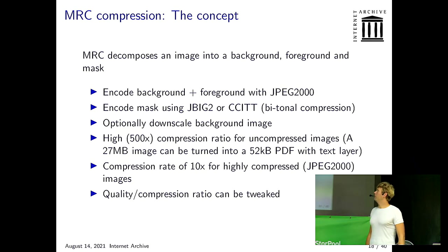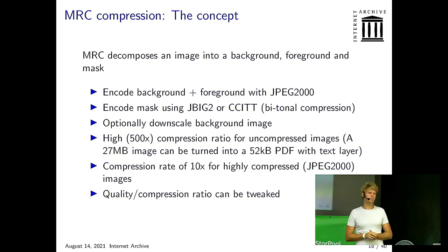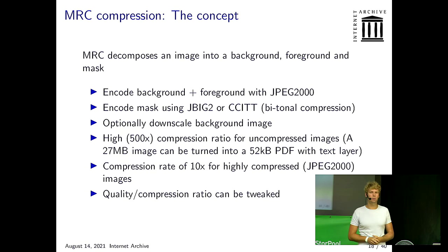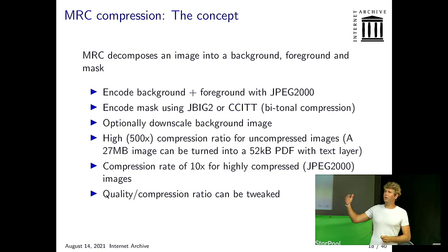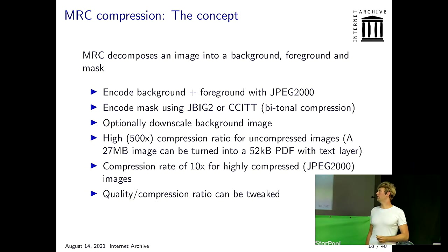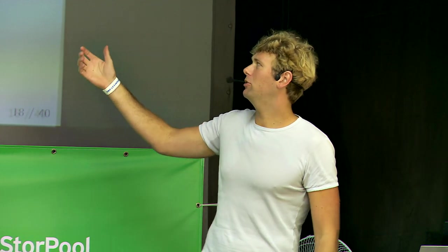How much does this compress? If you take a completely uncompressed image, you can compress up to 500 times easily and still have a pretty readable result. If I get a letter from the government, scan it, and compress it, it will go from about 27 megabytes to 52 kilobytes — really small. If you do that with already compressed images like JPEG 2000s, you can get about a 10x factor, which is still pretty big, and that is in fact what we do — all the photos we make of books are JPEG 2000s, and we make them 10 times smaller. The quality and compression ratios can be changed at runtime.